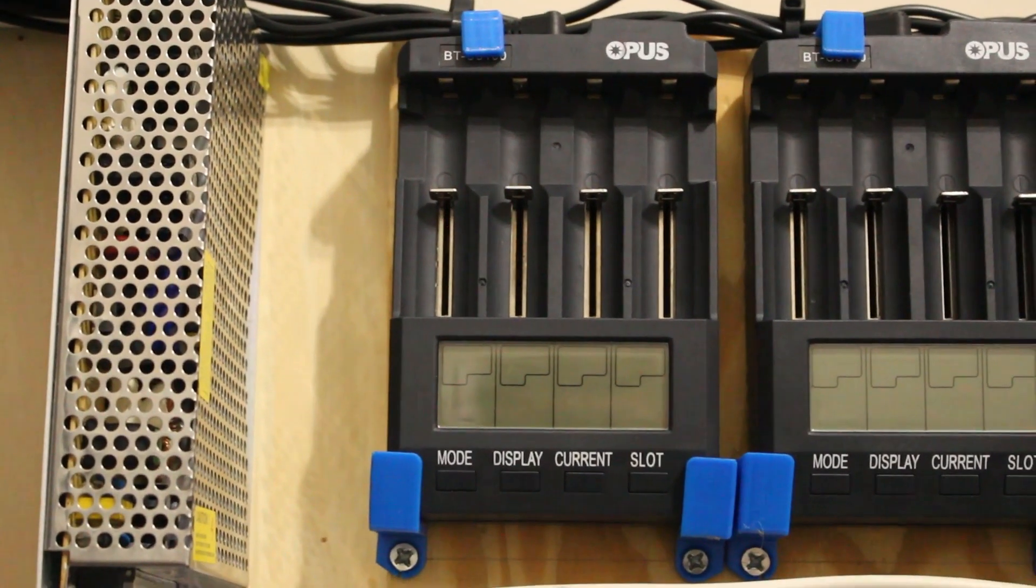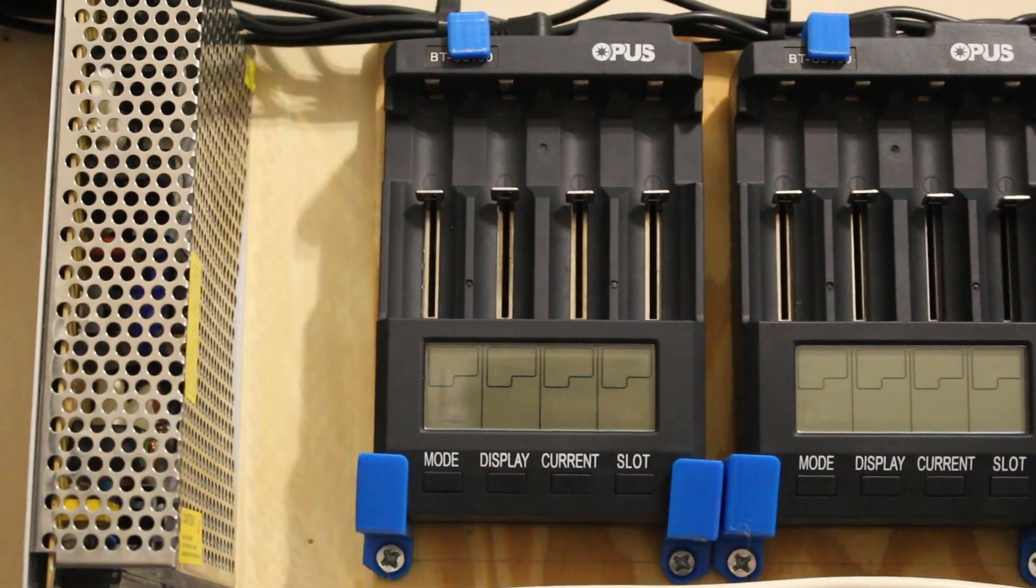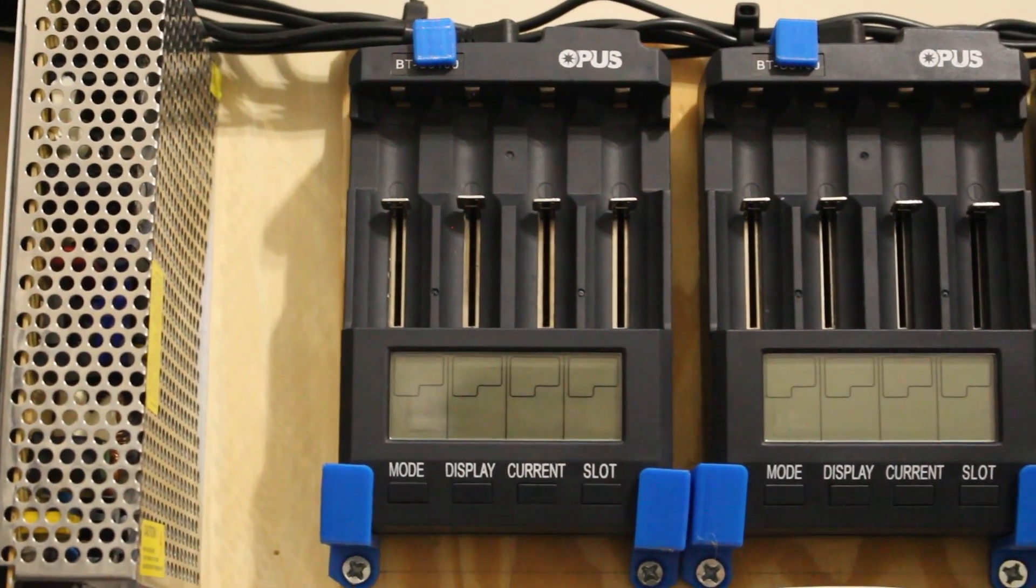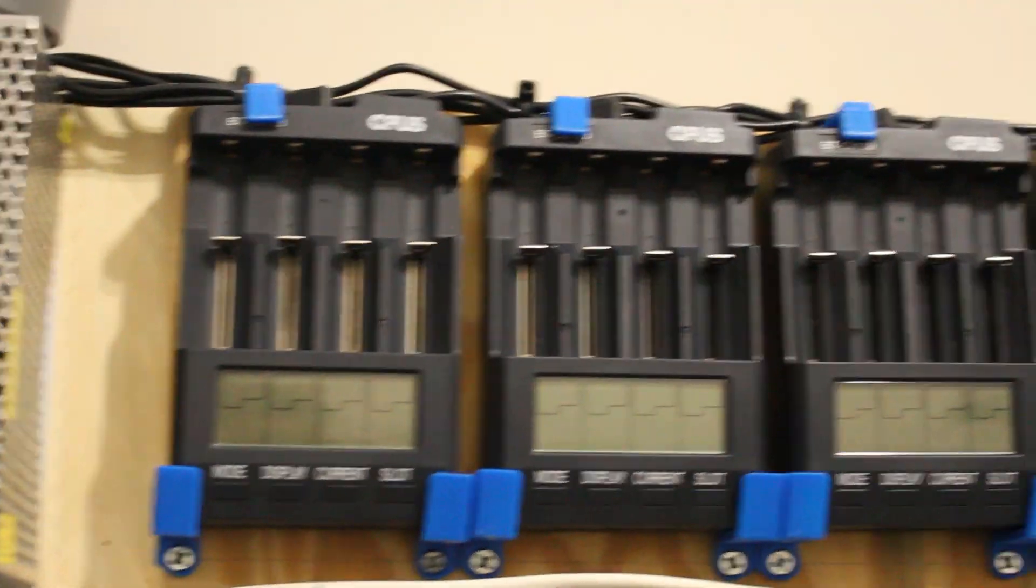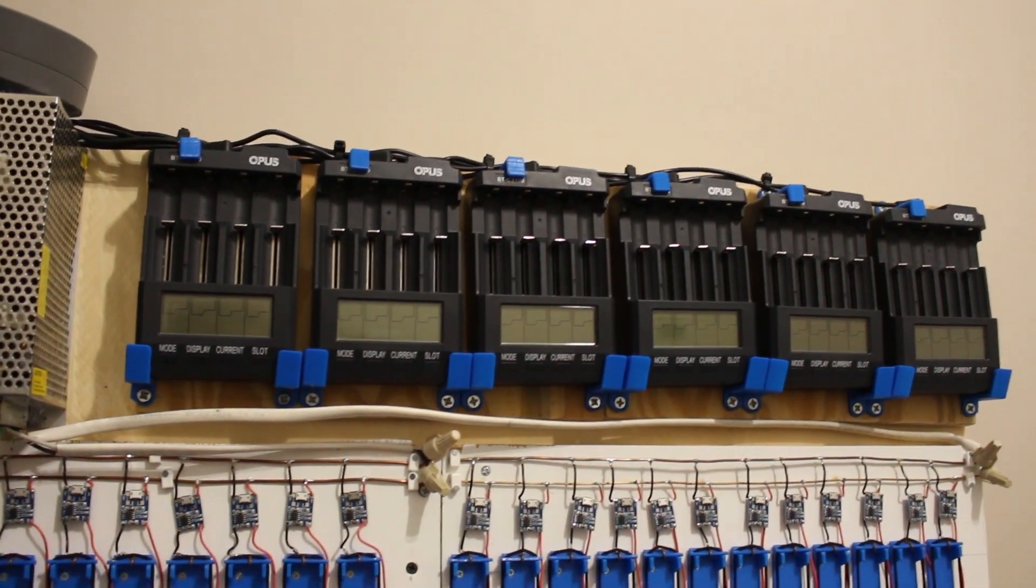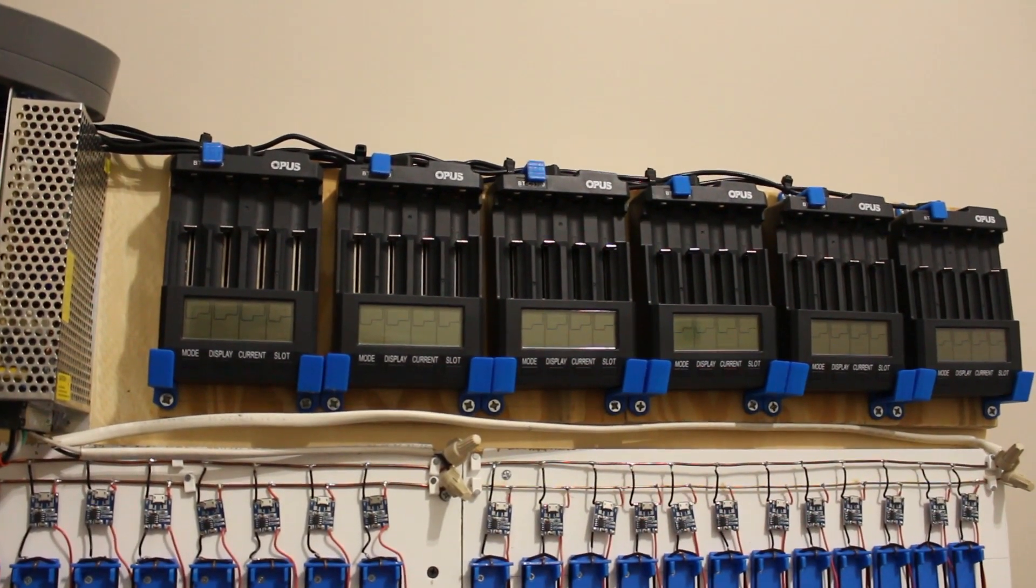The capacity tests were done by these Opus BTC 3100 or something like that. It's the same ones that everybody uses, but the unfortunate part is these guys, so there's 24 bays here, and they all test slightly differently.